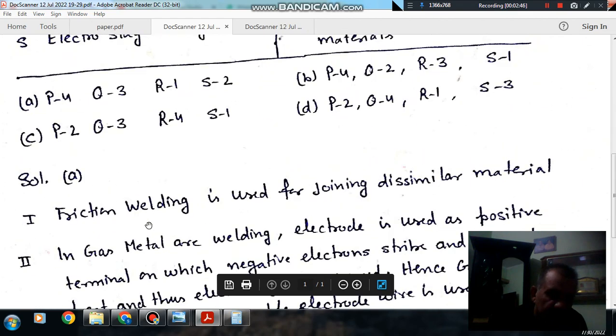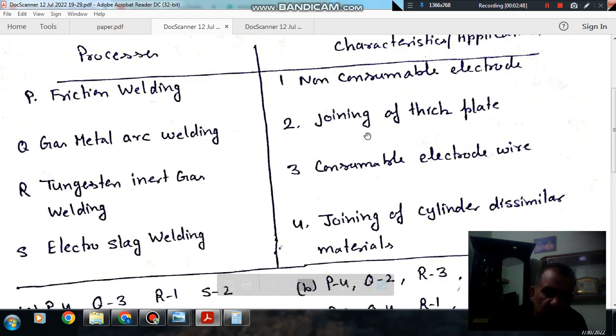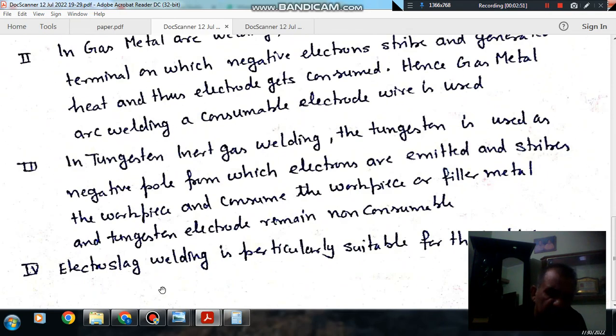Next is electroslag welding. So last one is S is 2. Electroslag welding is used for joining thick plates. So the answer is option A.